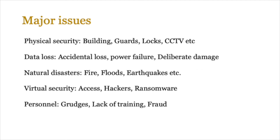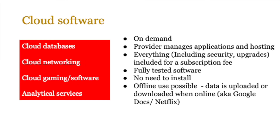Now, cloud software — there are four main types: cloud databases, cloud networking, cloud gaming, and cloud analytical services. Cloud software is normally provided by the same provider that offers storage; it's on demand and you use it when you need it. The provider manages applications and hosting, and everything including security upgrades is included in a subscription fee. Think of this as a subscription to Microsoft Office 365 — you get access to all Microsoft's services including OneDrive, Teams, and more.